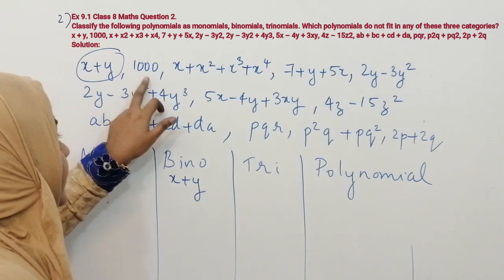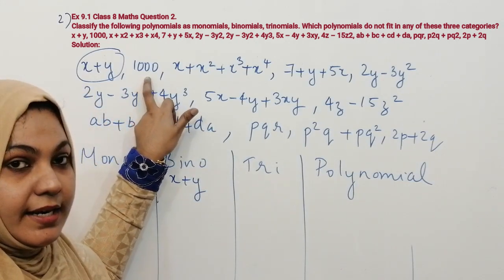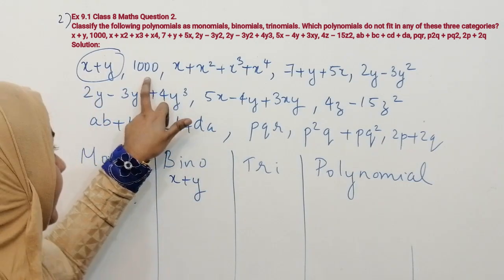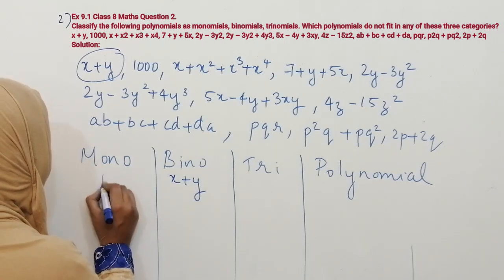The next one is 1000. You know that it contains only one term, so it is under monomial.